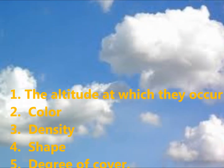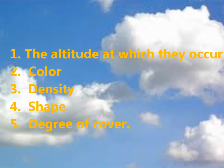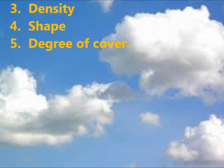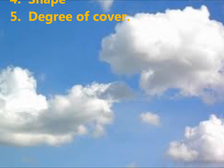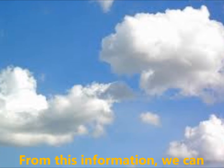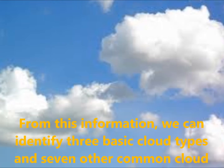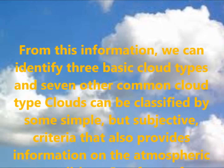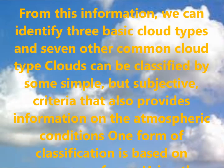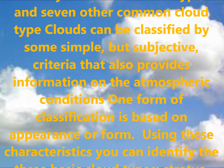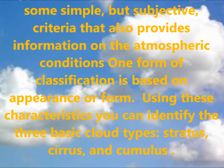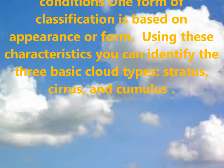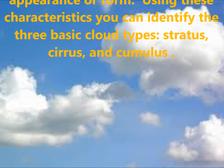We can identify clouds based on five basic characteristics: the altitude at which they occur, their color, their density, their shape, and the degree of cover. From this information, we can identify three basic types of clouds. Clouds can be classified by appearance or form. Using these characteristics, you can identify the three basic types of clouds.